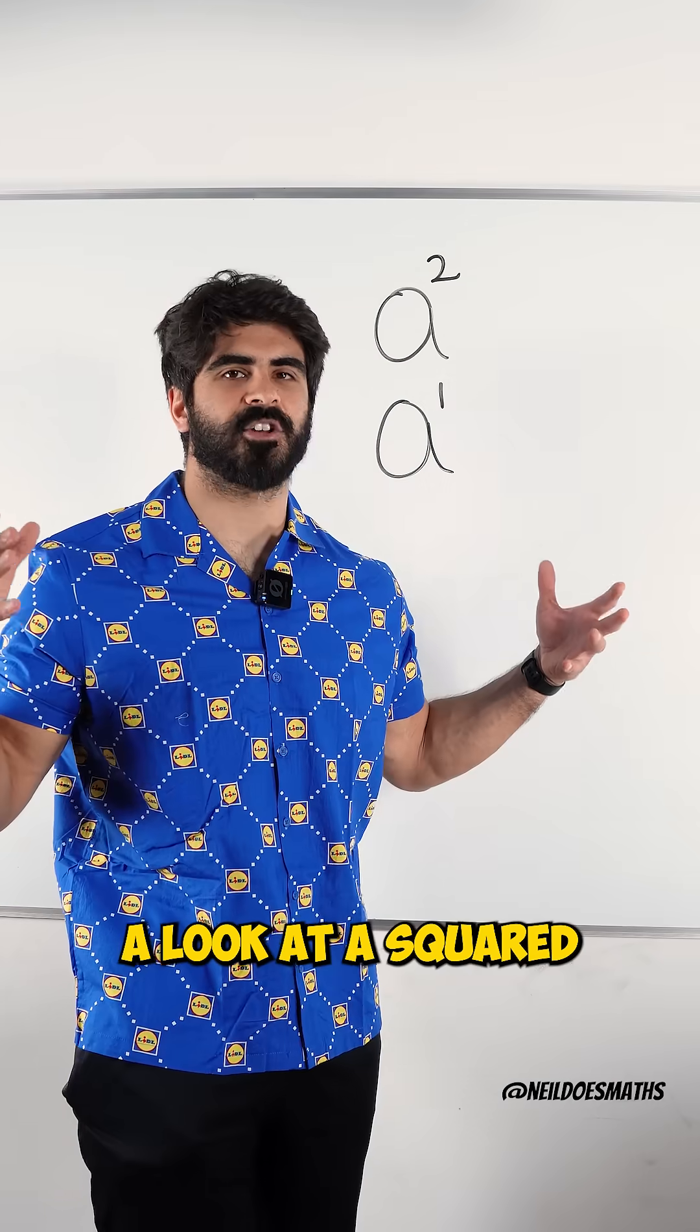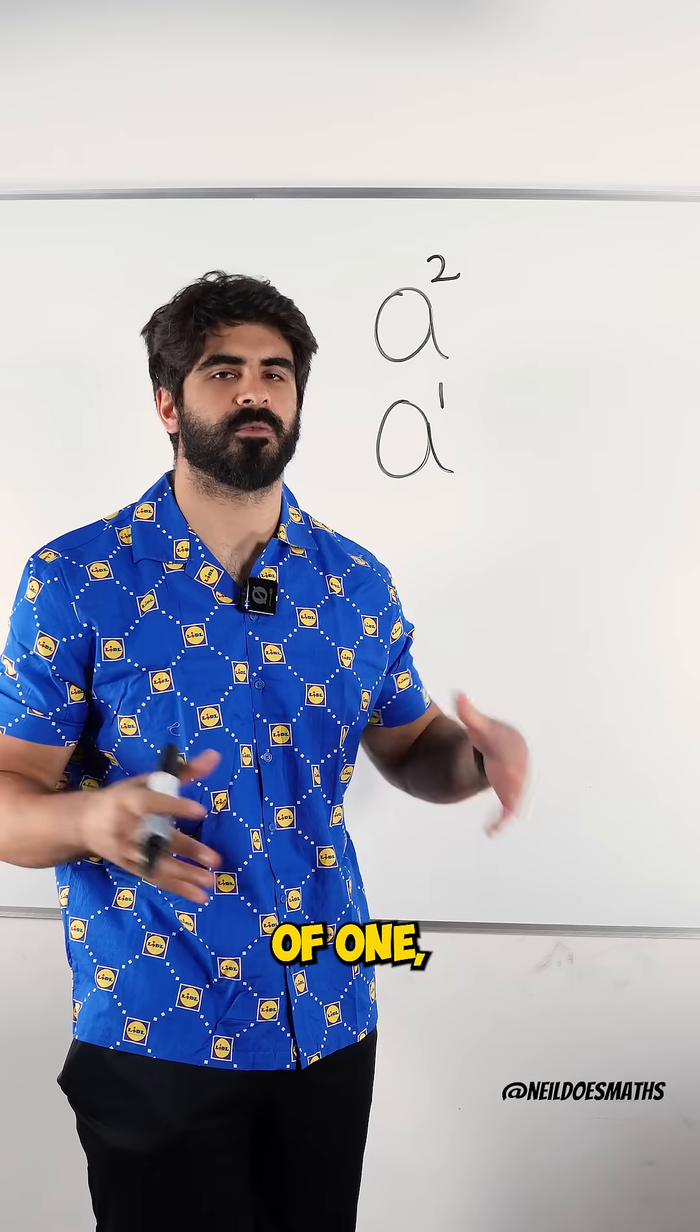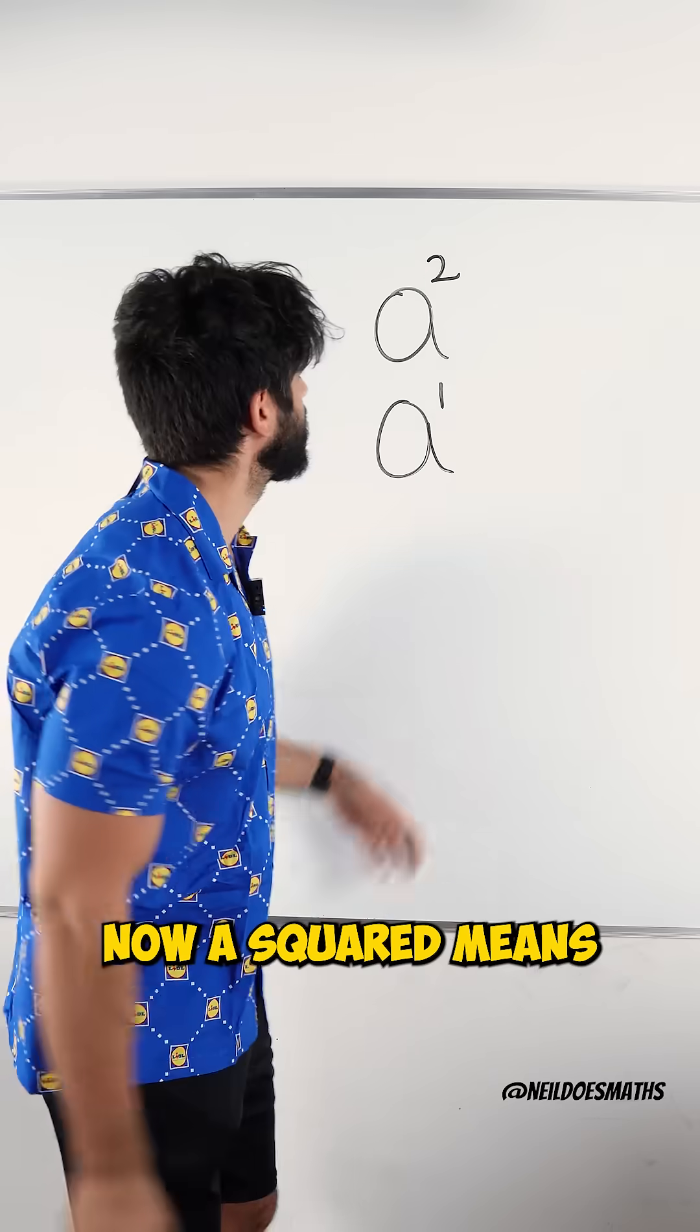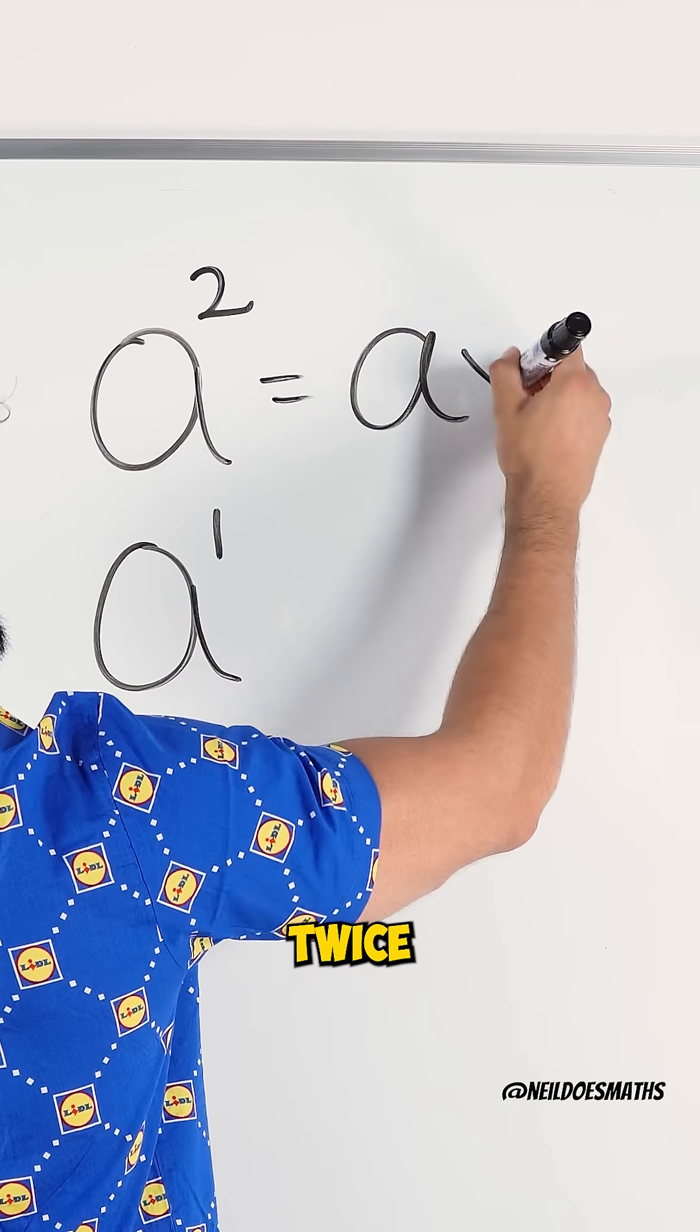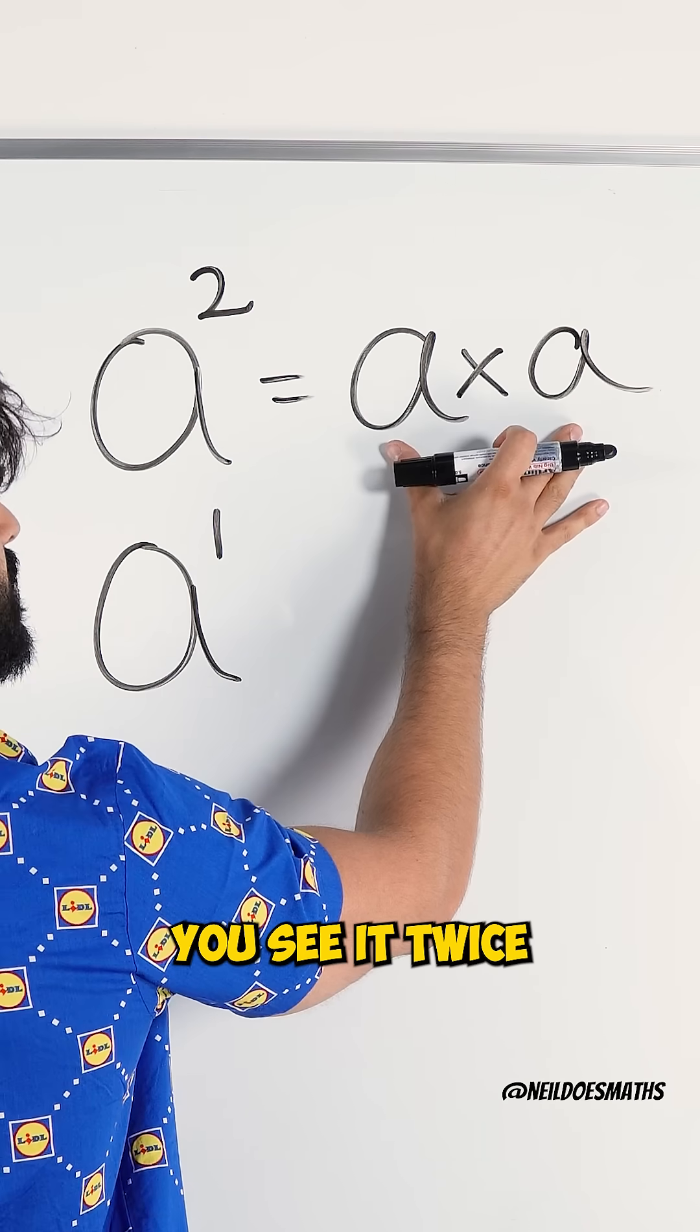In order to figure this one out, let's take a look at a squared and a to the power of one, where a is just a number that we don't know yet. Now, a squared means you take a and you multiply it by itself. So a should occur twice. You're multiplying a by itself, you see it twice.